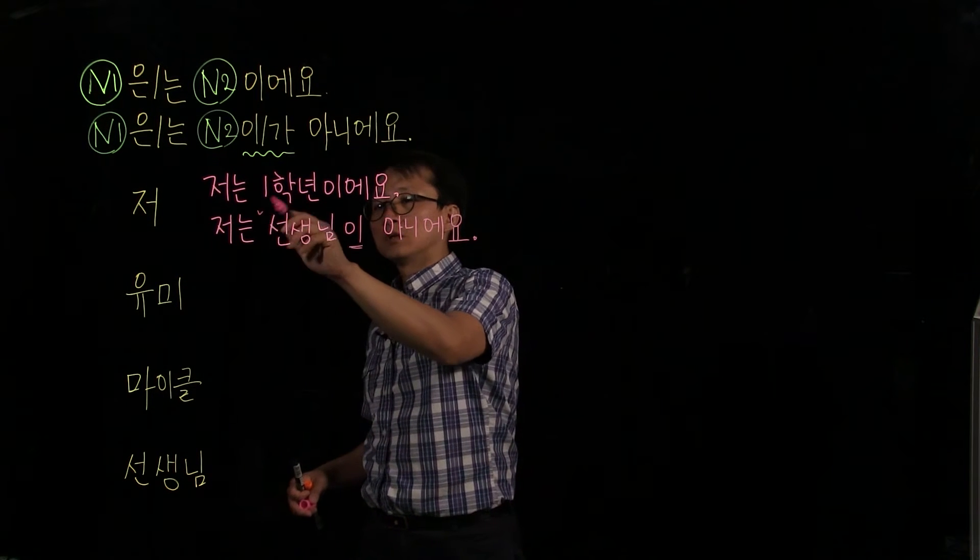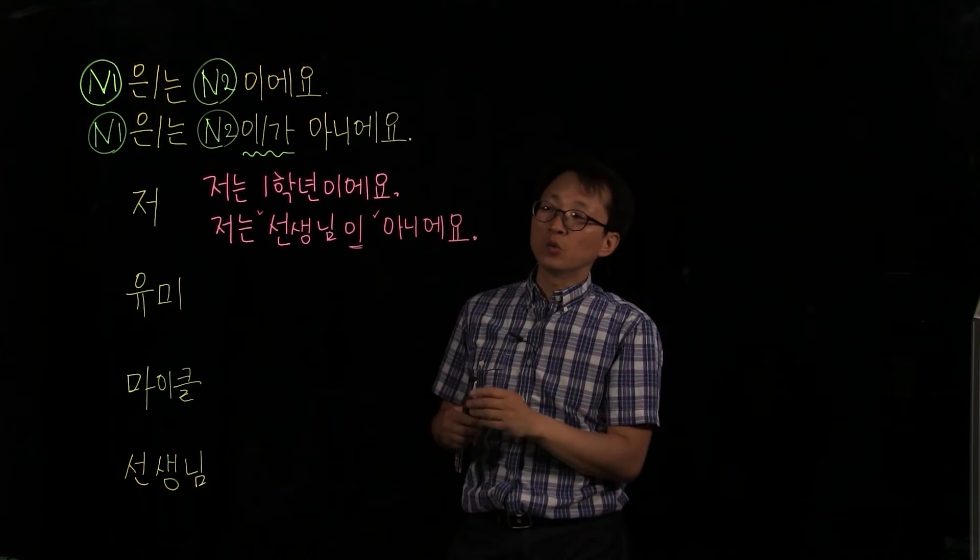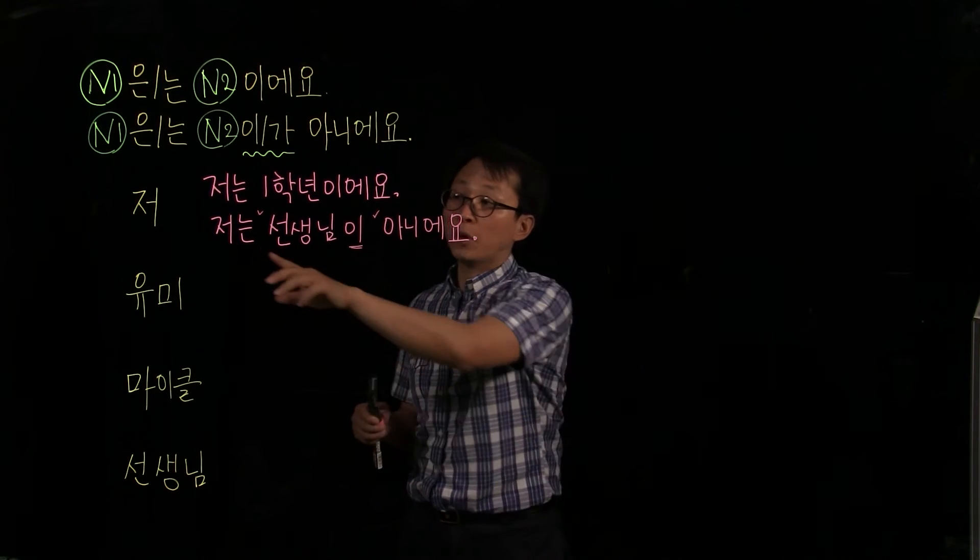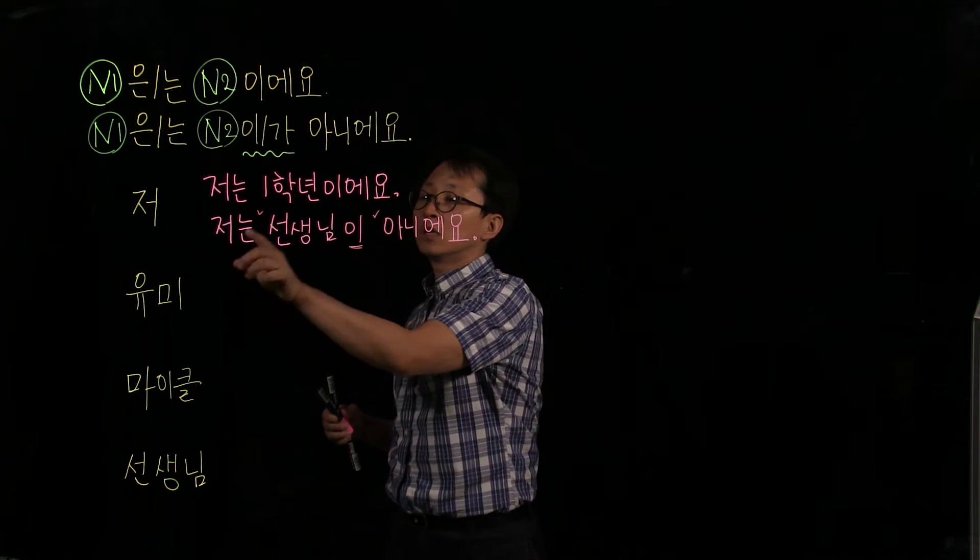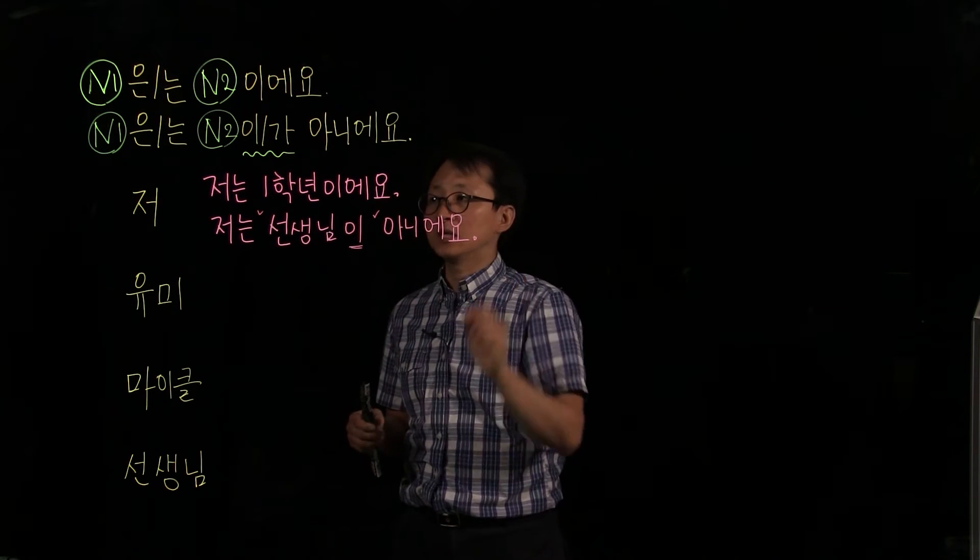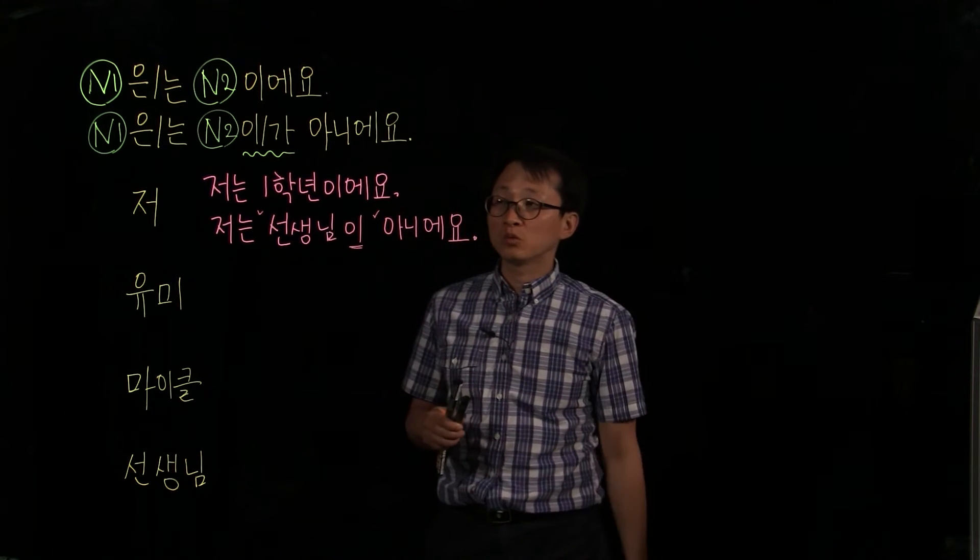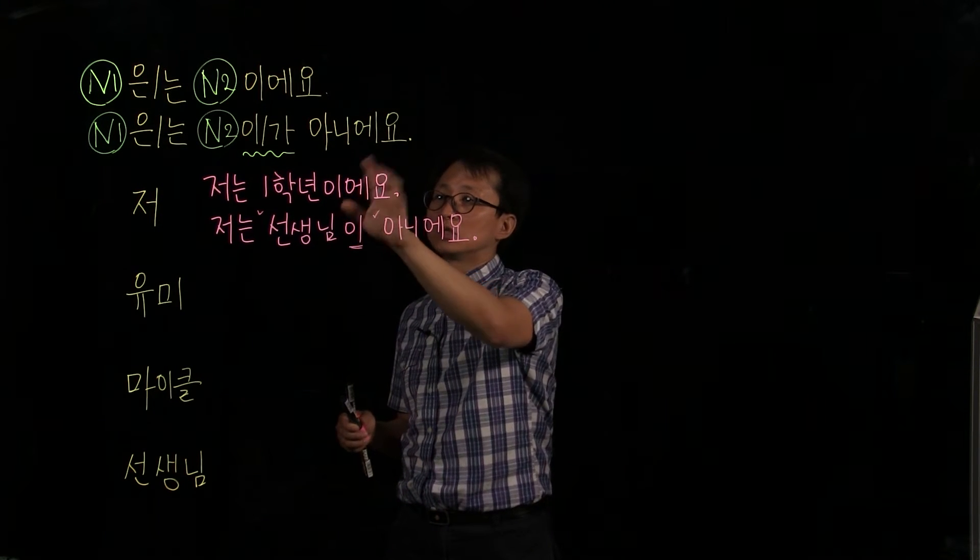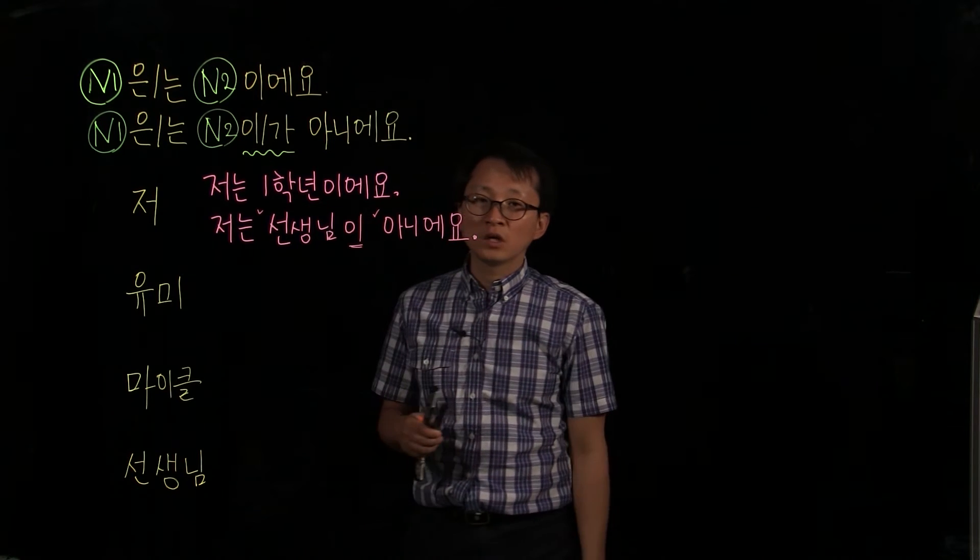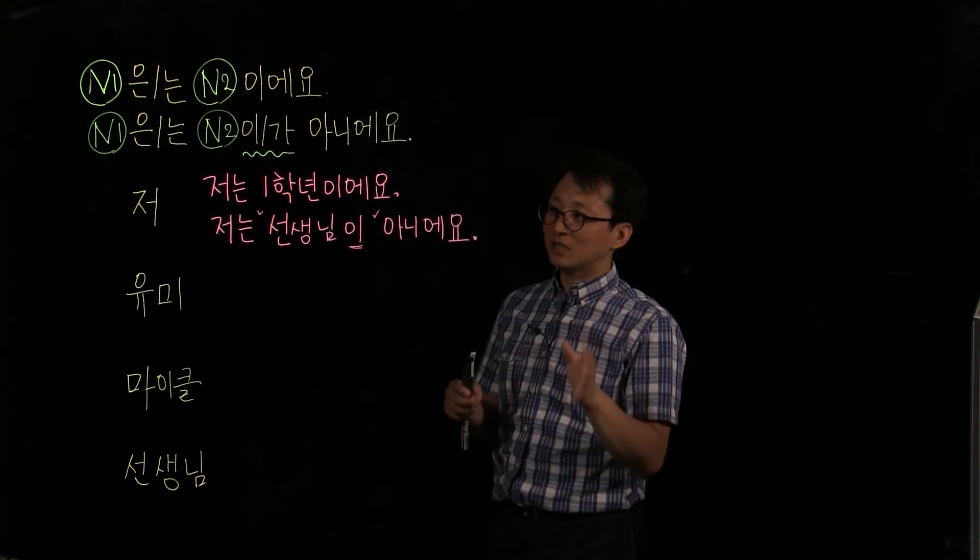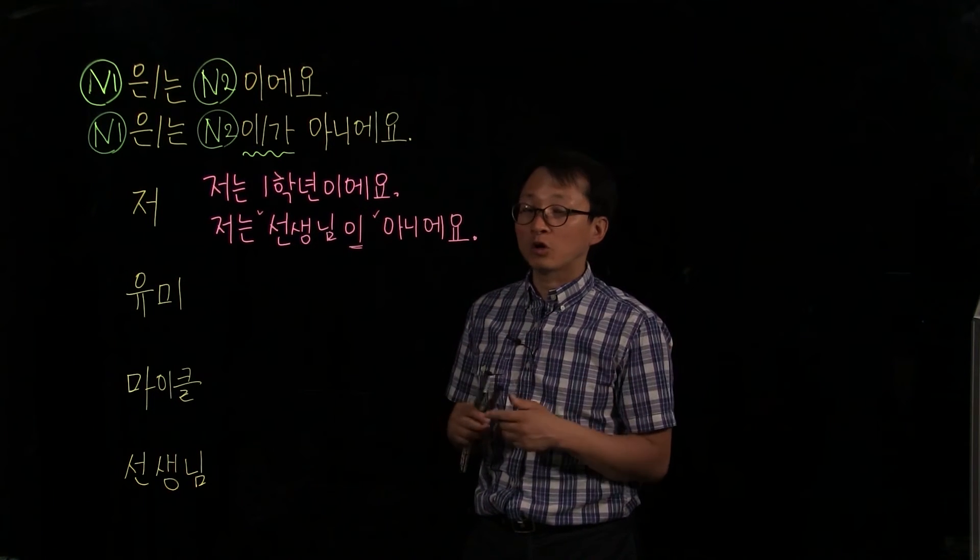You put a space here. So the basic rule is we put a space between words. But particles are not considered as independent words, 은, 이. They are not considered as independent words. So 저는, and space. 선생님이, space, 아니에요. 저는, space, 일학년이에요. 이에요 is actually an independent word, but this is just an exception. We just attach this 이에요 to this preceding noun. Spacing is important, but at this stage we are not going to talk about spacing deeply. So we'll talk about it later.